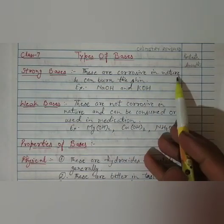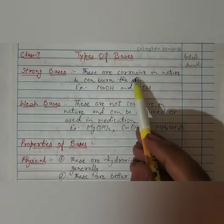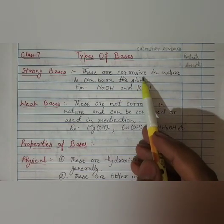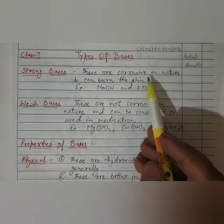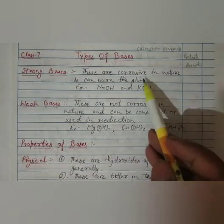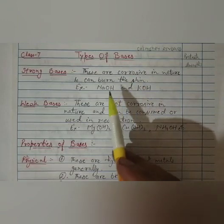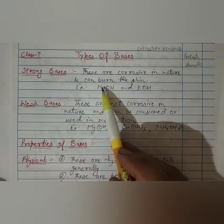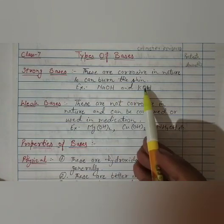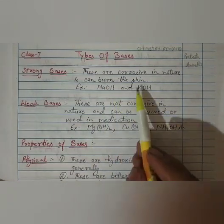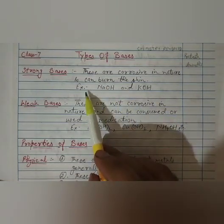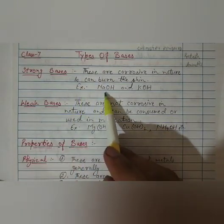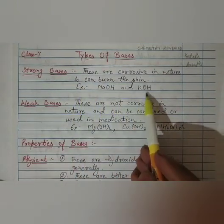These are corrosive in nature. Corrosive means if they come in contact with any substance, then they harm that substance. Basically, if they touch our skin, then they can burn the skin also. So these are very corrosive. Examples of strong bases are sodium hydroxide and potassium hydroxide.